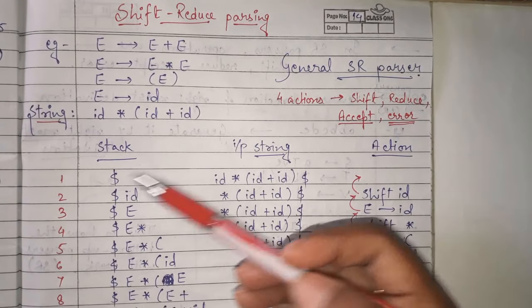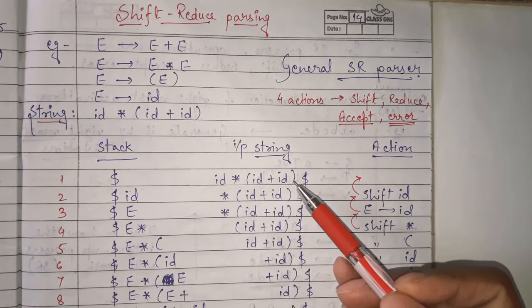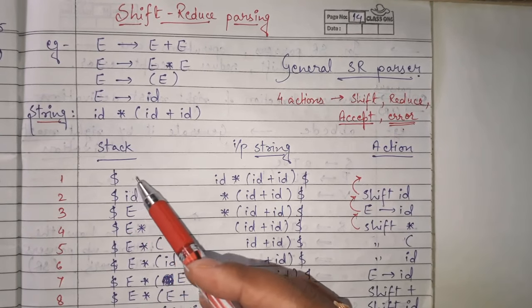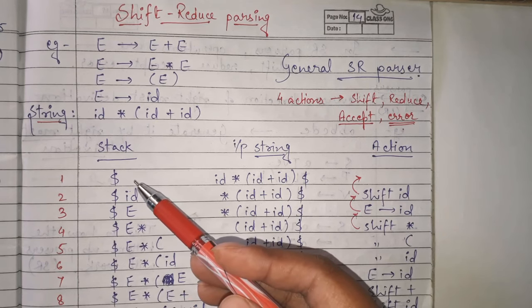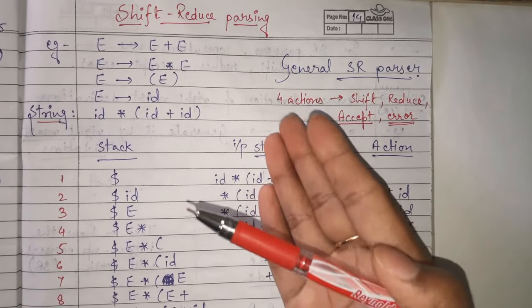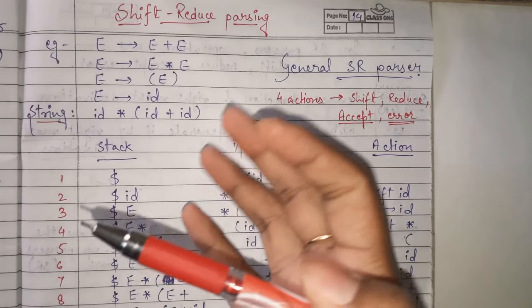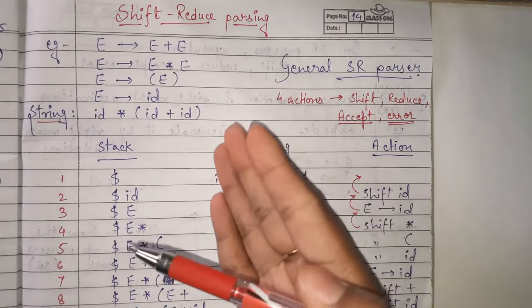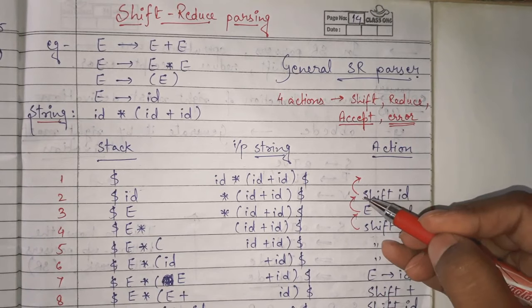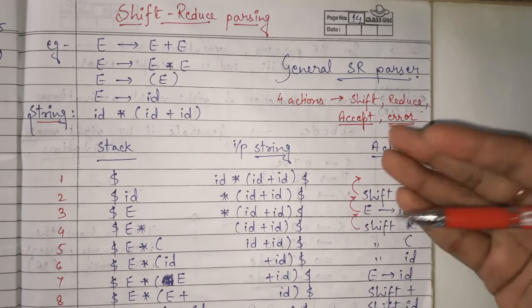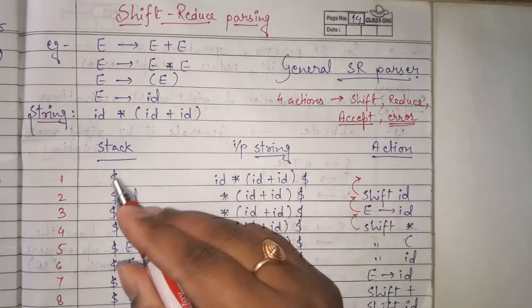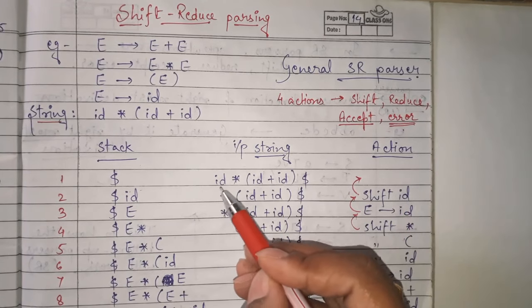Initially in the stack we have only dollar, and the input string is the whole string appended with dollar. The first step: with the dollar, is there any symbol present? No. So the first action is to shift a symbol from the input string to the stack. Whenever we insert a symbol from the input string to the stack, it is a shift action. So the first action is shift ID.